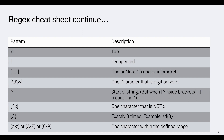Caret (^) means start of string, but when you write caret inside square brackets that means NOT. For example, in square brackets [^x] means one character that is not x. In curly braces, writing a number means that exact number of times. For example, curly braces {3} means exactly 3 times. You can use it along with a word or digit — for example, \d{3} means 3 digits.